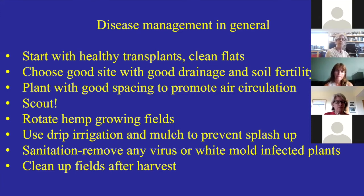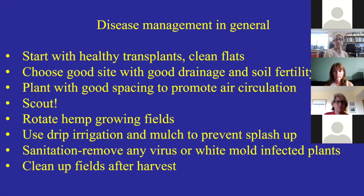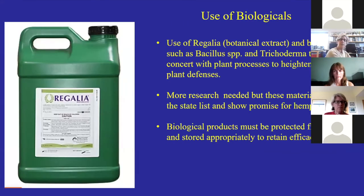To wrap up, disease management in general: always start with healthy transplants and clean flats. Choose a good site with good drainage and soil fertility. Plant with good spacing to promote air circulation — that's probably one of the best things you can do. Scout regularly, rotate hemp growing fields, use drip irrigation and mulches to prevent splash-up, use sanitation by removing diseased plants from the field promptly, and clean up fields after harvest.